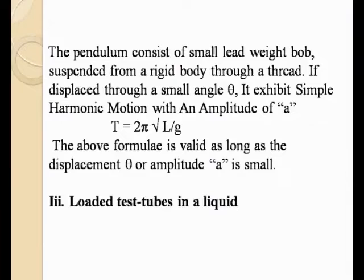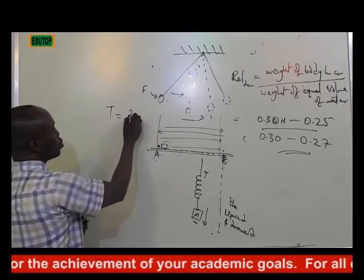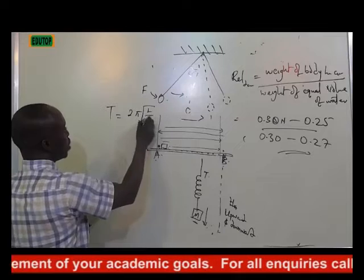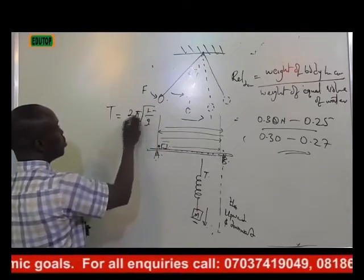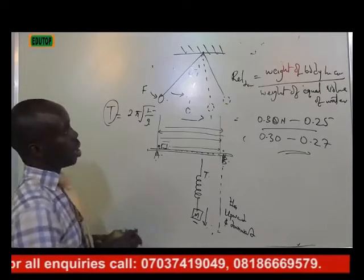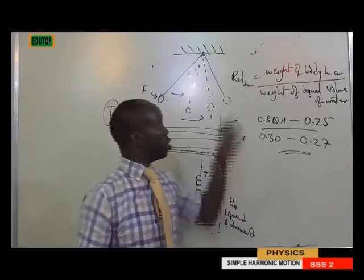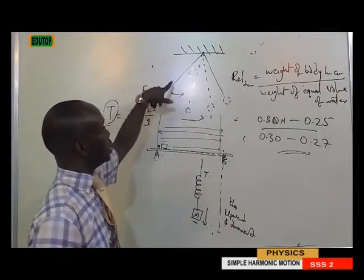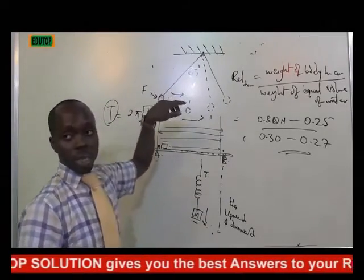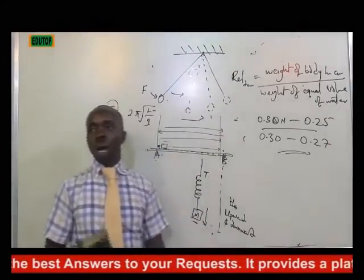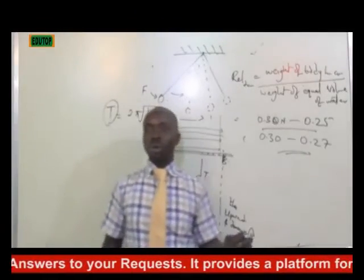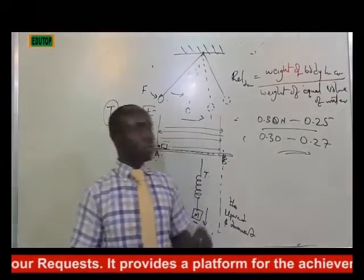We can obtain the period using the formula T = 2π√(L/g), where T is the period, L is the length of the thread, and g is the acceleration due to gravity. Period is the total number of complete movements — the complete oscillations — the ball makes within some seconds. This formula is valid as long as the displacement theta or amplitude is very small.